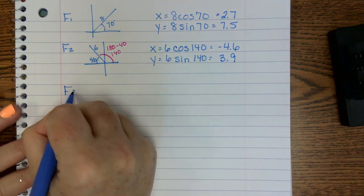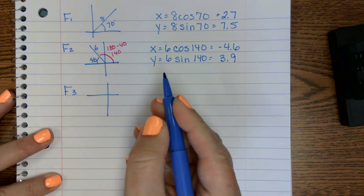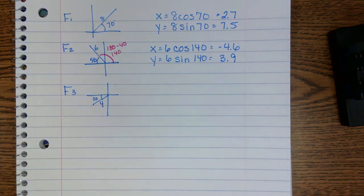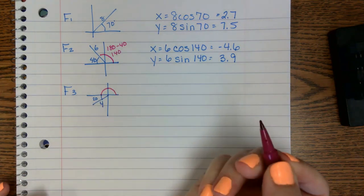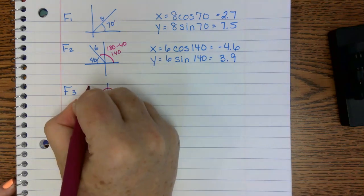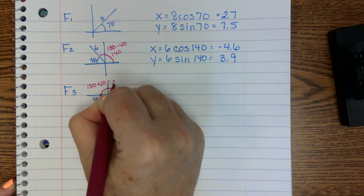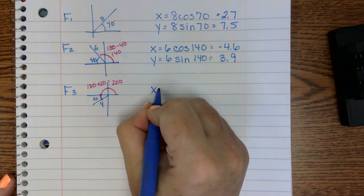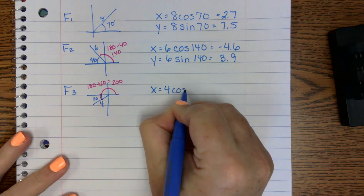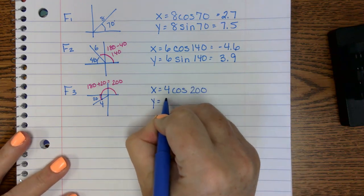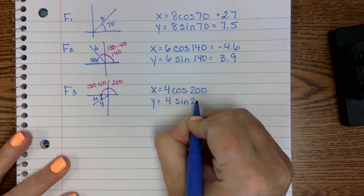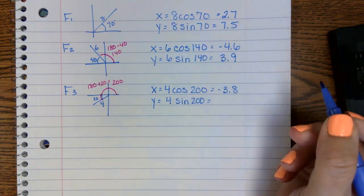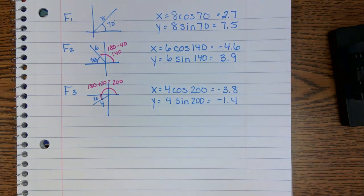And we still have one more. And this comes from here by 20 and this is 4. Now notice this and this is 180 plus a little bit more. So this time it will be 180 plus 20 which will give us 200. Now we have x equals 4 cosine of 200. We're going to do y equals 4 sine 200. This one comes out to be negative 3.8 and negative 1.4.